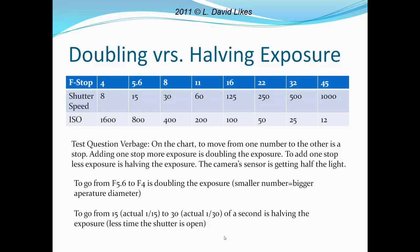Some questions came up about doubling and halving exposure. We're going to use this chart. What may be on the test as far as verbiage is: to move from one number to another is a stop. So any f-stop change, any shutter speed change, or any ISO change is one stop. To add one stop less exposure is halving the exposure — the camera sensor is getting half the light. Adding one more stop of exposure is doubling the exposure. For example, if you go from f/5.6 to f/4, that is doubling the exposure, because a smaller number equals a bigger aperture diameter. And that's for the aperture or f-stop.